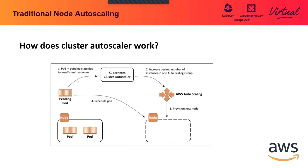Let's take a look at how cluster auto-scaler works. It works around this concept of node groups, which is an auto-scaling group or ASG in the case of AWS. It looks for pending pods and sets the desired count of instances based on the number of pending pods on a node group. Once the underlying provider provisions the capacity, the kube scheduler places these pods onto the new nodes being created.